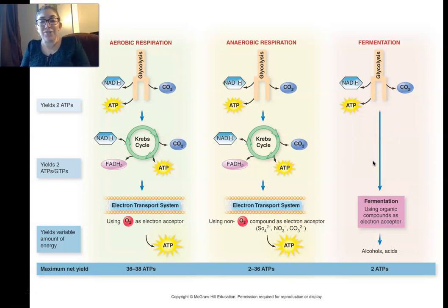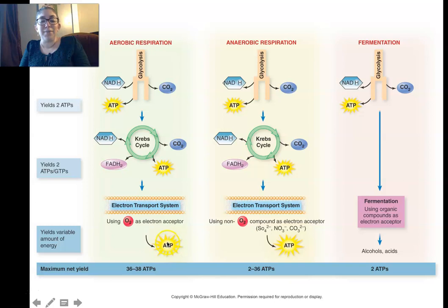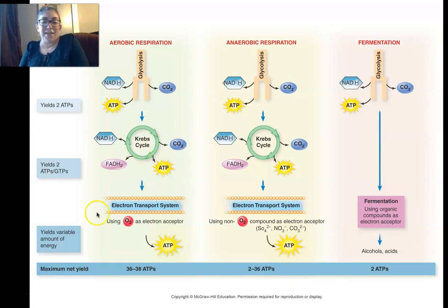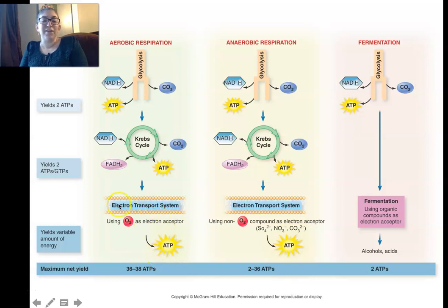Looking at the summary of these pathways: glycolysis and the Krebs cycle produce a small amount of ATP directly, but most ATP is generated by the electron transport chain. If anything, the ATP symbols coming from glycolysis and the Krebs cycle should be drawn smaller, and the one from the electron transport chain should be much larger — that part of the pathway is what really makes the most ATP.